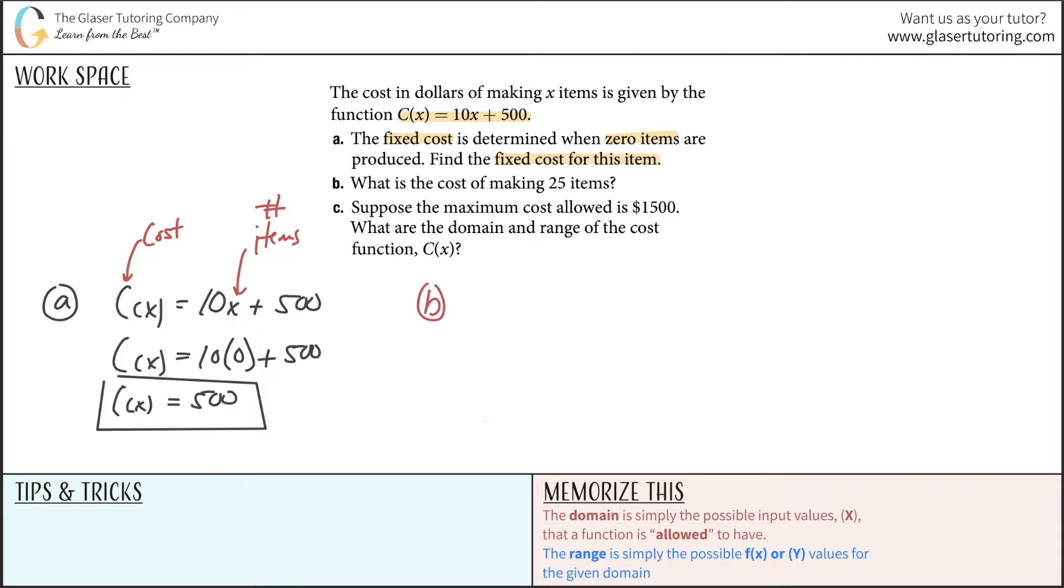Letter B says, what is the cost of making 25 items? Again, we have our function. The cost will be equal to 10 multiplied by the number of items produced plus basically our fixed cost of 500 dollars. This is like the rent, and this would be the cost of each pizza.